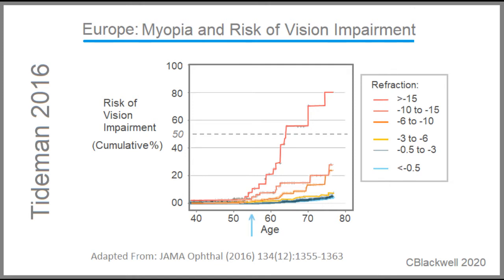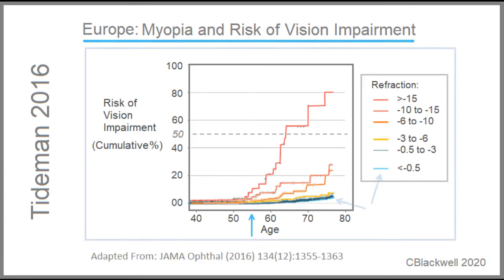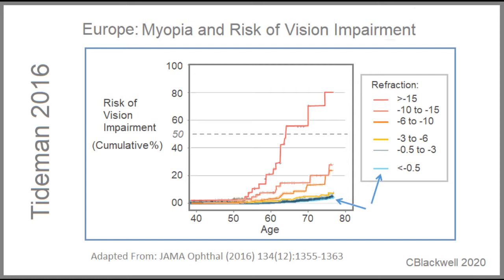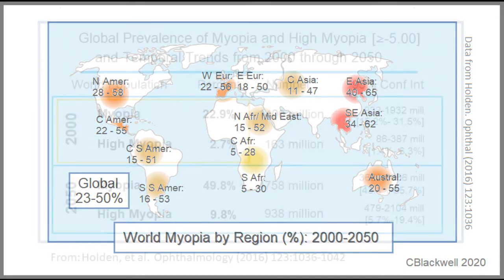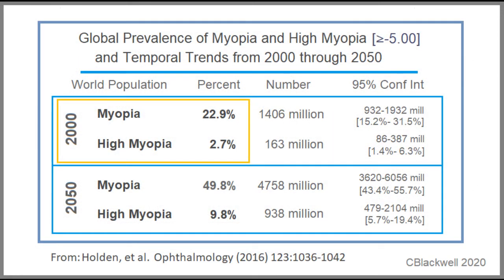As a reference point, it looks like in the mid-50s vision loss starts to take off. The non-myopia controls show some reduction in vision with age, as expected. Relating myopia levels and risk back to our world map: figures from Holden showed that in the year 2000, about 23% of the world was myopic and just short of 3% was highly myopic — the high-risk group. By the year 2050, almost half of the world will be myopic and almost 10% will be highly myopic, with all the risks that carries.